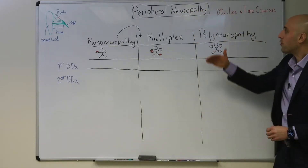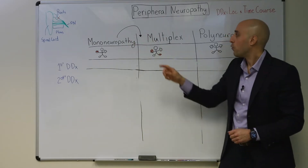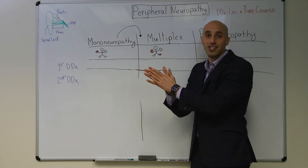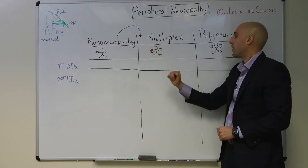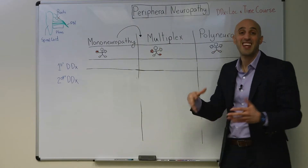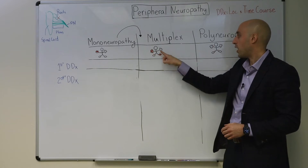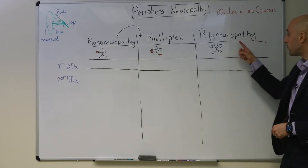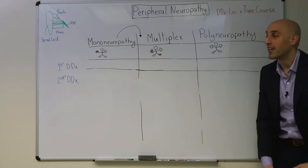Now let's talk about the three buckets of peripheral neuropathy. That includes mononeuropathy, which literally means pathology of a single nerve — a patient who has a patch of sensory or motor deficits. Mononeuropathy multiplex is pathology of a single nerve multiple times; these patients usually present with asymmetric sensory-motor symptoms, for example a wrist drop and a foot drop. In polyneuropathy, which affects all nerves, patients present with symmetric sensory-motor symptoms, often starting in the feet.